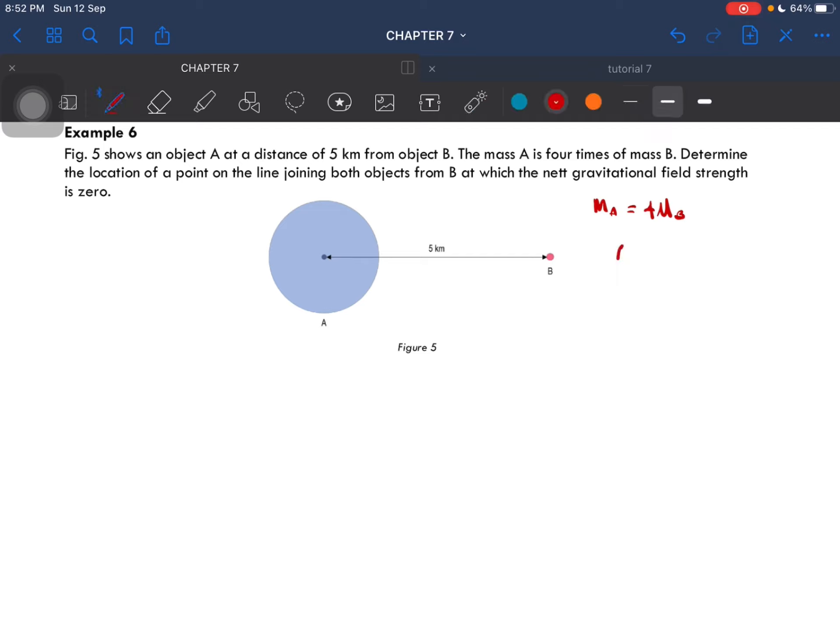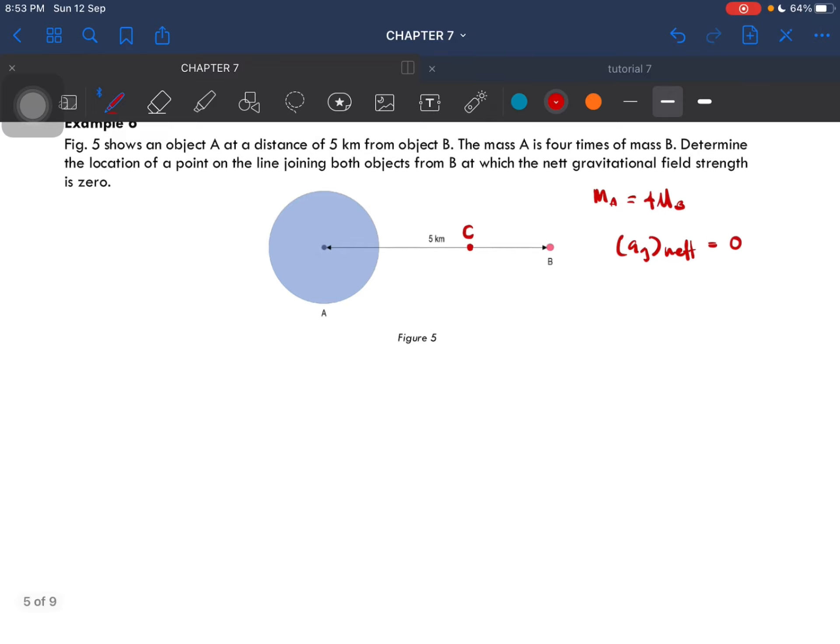There's a point where the net gravitational field strength is equal to 0. So we have to find that point. We can label it as point C. So let's say this is the point where gravitational field strength is equal to 0. This is C.